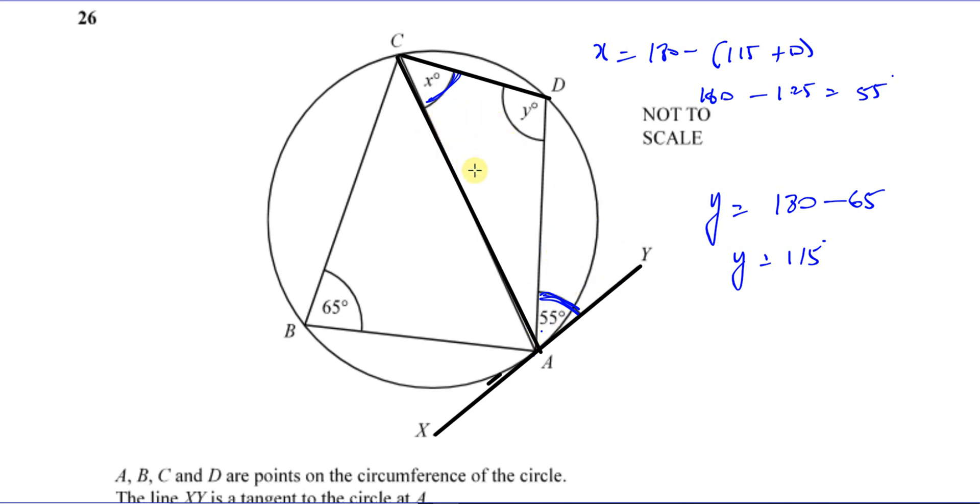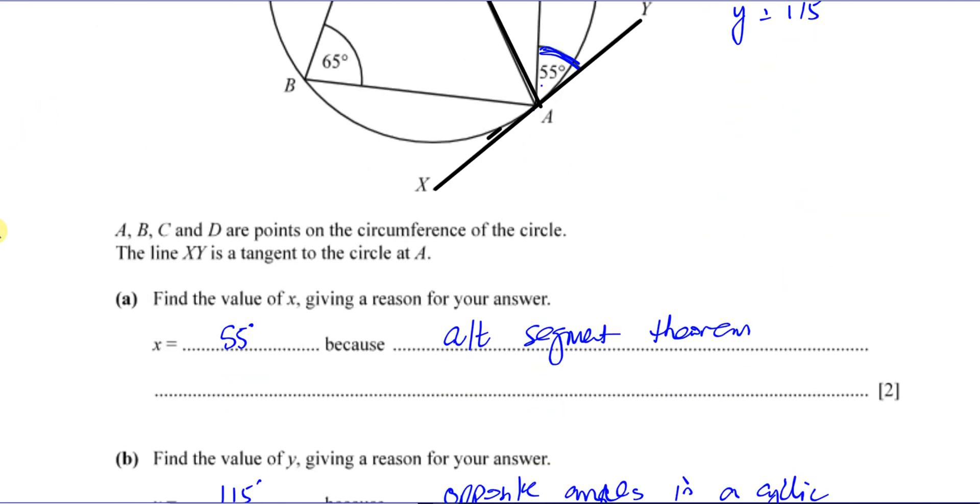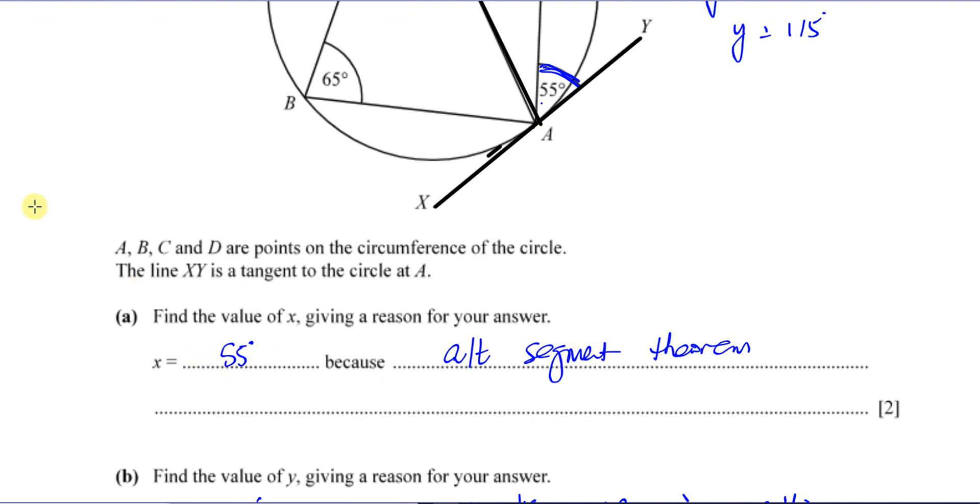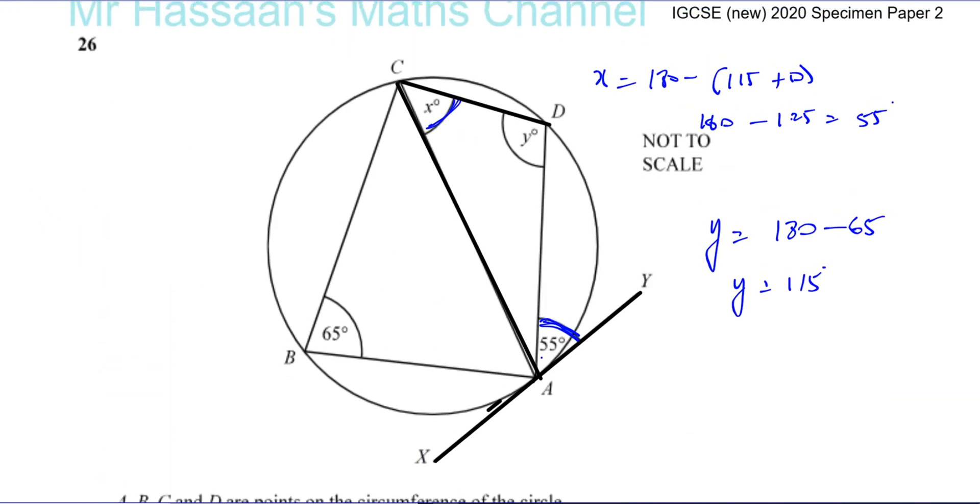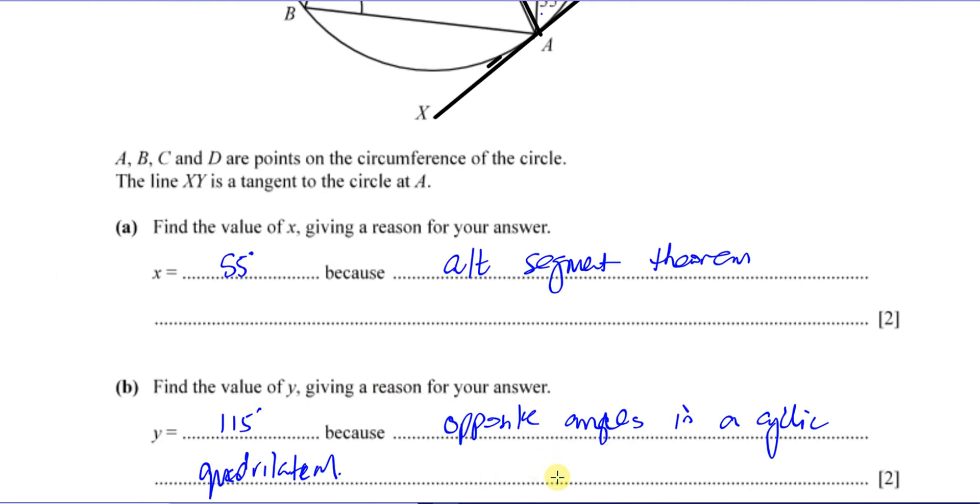So that's how you can, you know, that X is 55 by alternate segment theorem, as I've written there. So that's a bit of an explanation there just to make you understand. Thank you for watching and the next question should be the next one in the playlist.